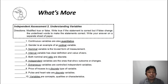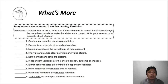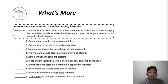For the next activity, this is a modified true or false. Write 'true' if the statement is correct, but if false, change the underlined words to make the statement correct. Write your answer on a separate sheet of paper. Pause this video, and when you're done, let's continue.